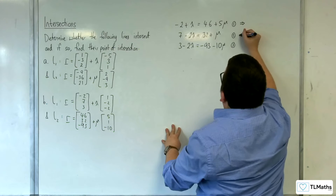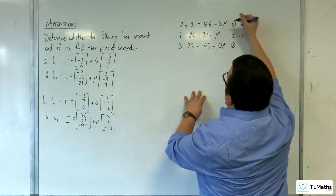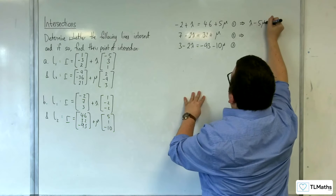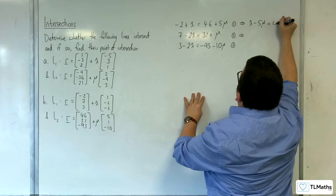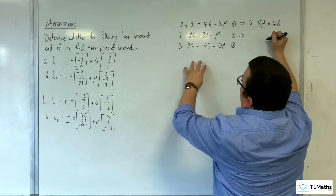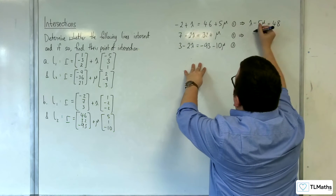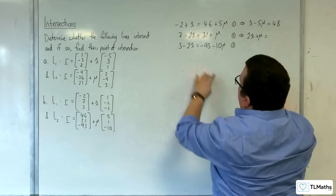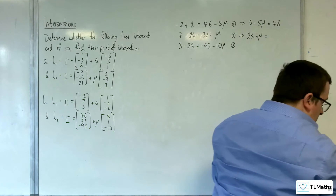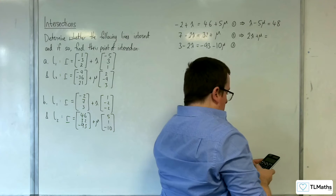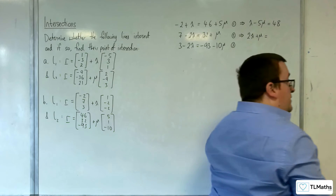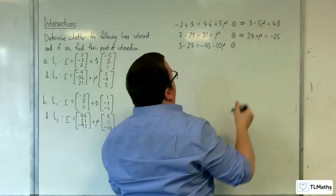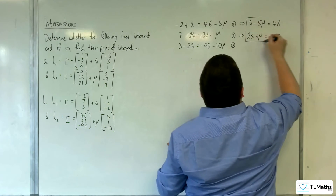So let's sort out equations 1 and 2. I'm going to subtract 5μ from both sides, so λ take away 5μ, and add 2 to both sides, giving 48. And then adding 2λ to both sides and subtracting 32 from both sides, so 7 take away 32 gives minus 25. So here are our two equations which we now want to solve.